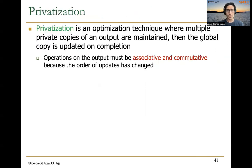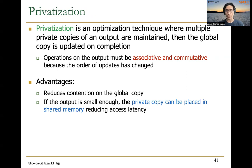One idea is to use privatization, which basically consists of using multiple sub-histograms in order to reduce the frequency of atomic conflicts. Privatization is an optimization technique where multiple private copies of an output are maintained and then the global copy is updated on completion. The requirement for privatization to work is that the operation needs to be associative and commutative — and that's the case for the addition we use when updating histogram bin counters. Advantages are that privatization reduces contention on the global copy, and if the output is small enough, we can place it in shared memory, which reduces the latency of the atomic operations.